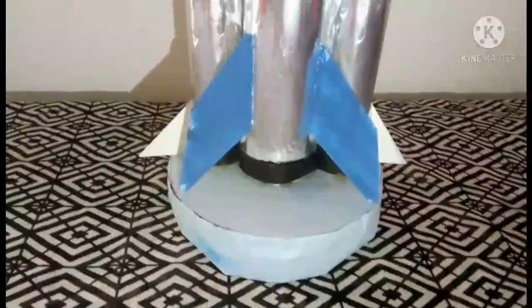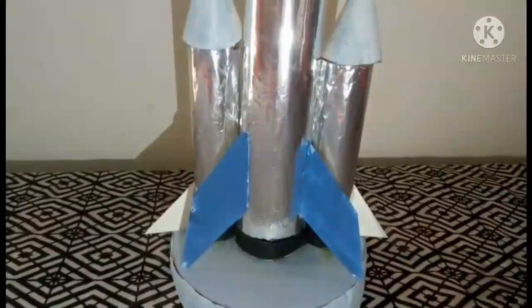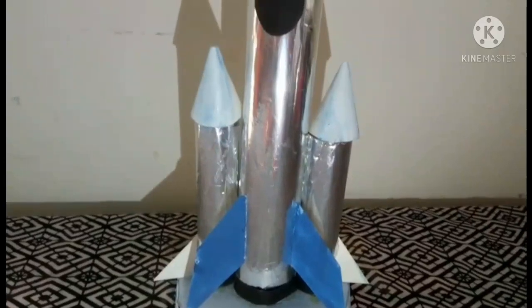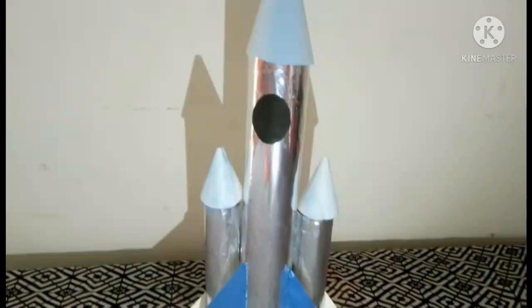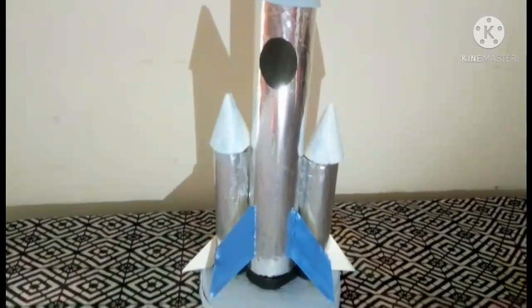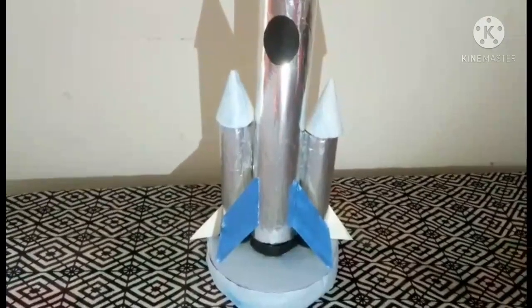Now you all can see, using two types of solid shapes, cylinder and cone, I made a nice model of rocket. You can also make nice models like this for your school projects or exhibition using different types of shapes.